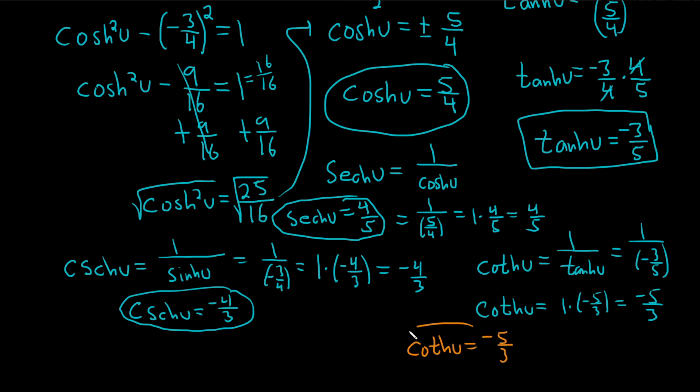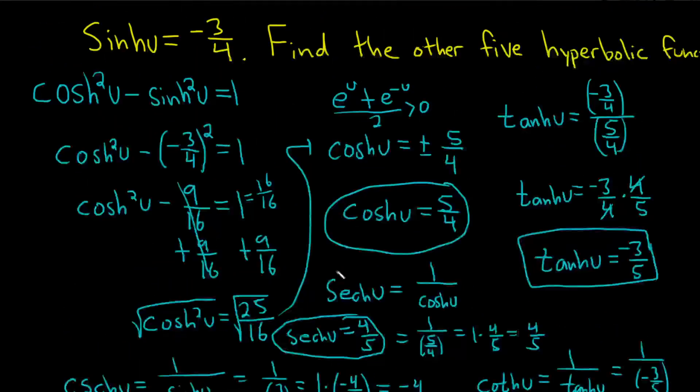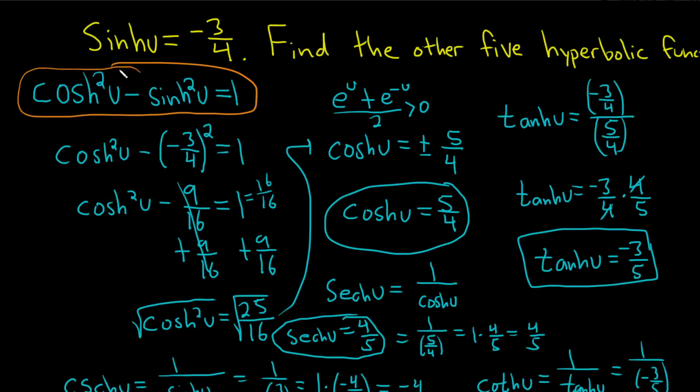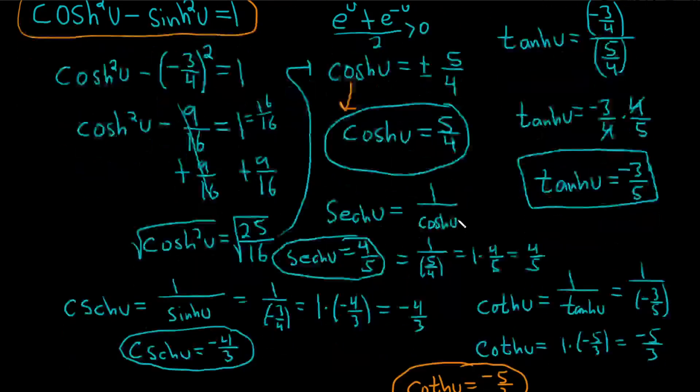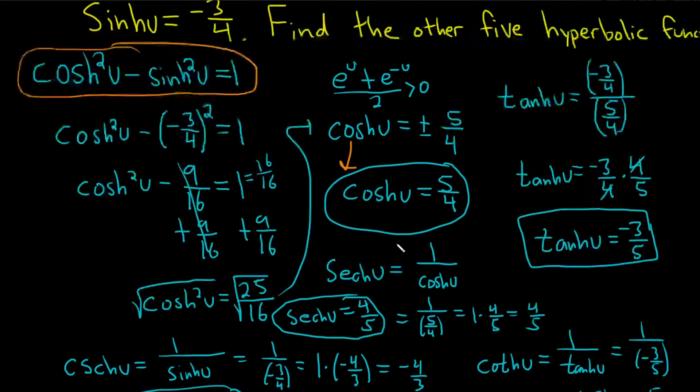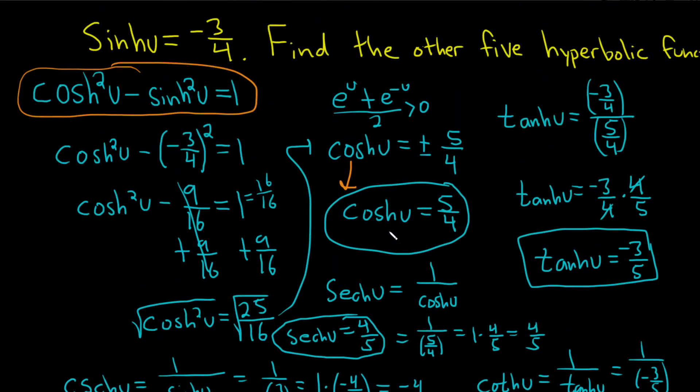So not too bad. Not really a hard problem if you know how to start it. So the key is, you start the problem by using this identity here, and that gives you cosh squared, and then realize that cosh is positive. That's kind of key, and that gives you this. And once you have sinh and cosh, you can divide them to get tanh, and then the other ones are just reciprocals, so it's pretty easy after that. I hope this video has been helpful to someone out there in the world. Good luck.